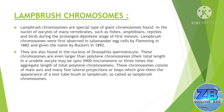Now let's talk about the second special chromosome type — lampbrush chromosomes. Lampbrush chromosomes are a special type of giant chromosomes found in the nuclei of oocytes of many vertebrates such as fishes, amphibians, reptiles and birds, during their prolonged diplotene stage of first meiosis. Lampbrush chromosomes were first observed in salamander egg cells by Fleming in the year 1882.